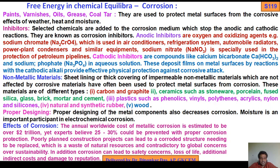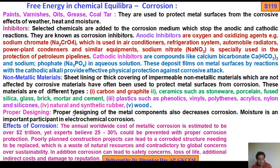Also natural and synthetic rubber and wood. Proper designing of metal components also decreases corrosion. Moisture is an important participant in electrochemical corrosion. Three components are required: water, metals, and electrolyte.